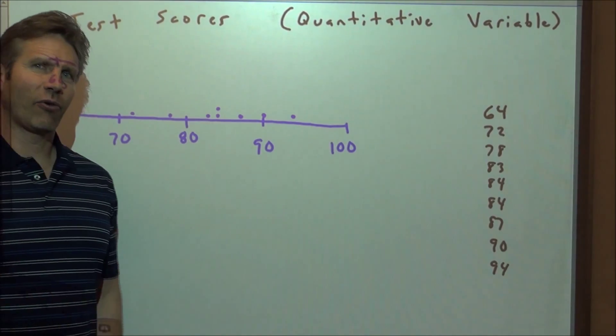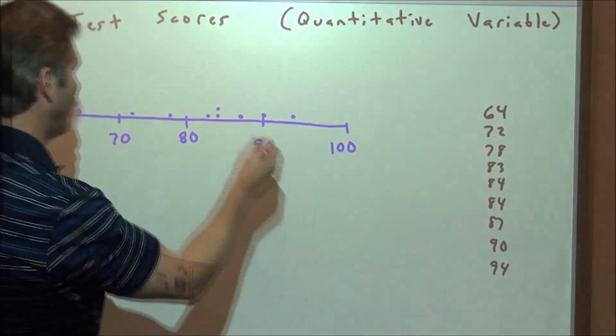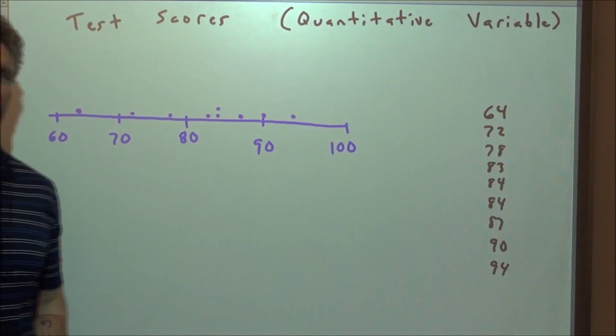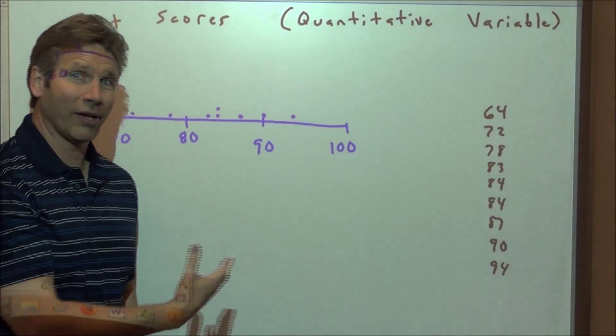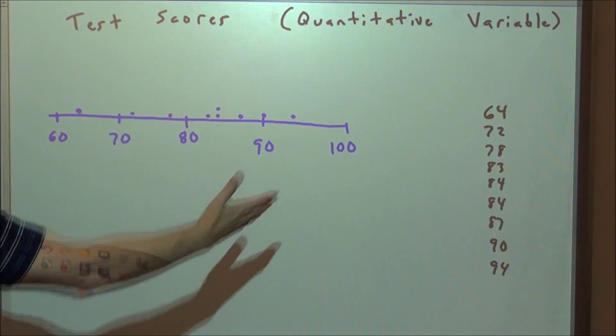One of the simplest graphs you can make is a dot plot. We just want to take, for example, these test scores and put a dot for every score along the number line. It becomes a very useful little graph that we're going to use later on doing statistics because we want a quick snapshot of what this distribution looks like. By the way,